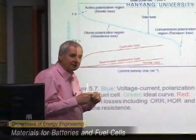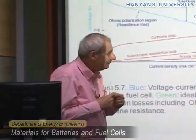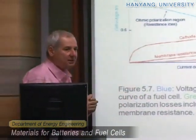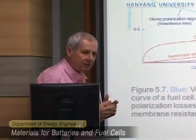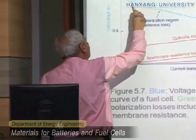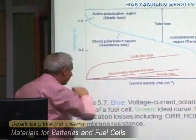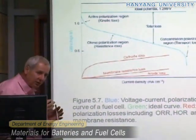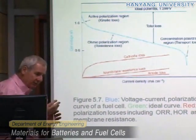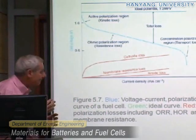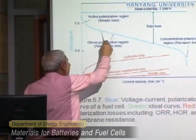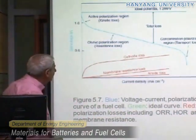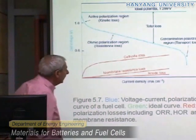But as soon as we close the circuit and we have to pass the current, we go into the same problem that we discussed with the lithium battery. We will have some losses due to various effects. Immediately we have a loss, and this is due to the kinetic loss — it is due to the electrochemical process. Then of course you have an electrolyte which has certain resistance, and this will be the ohmic loss.